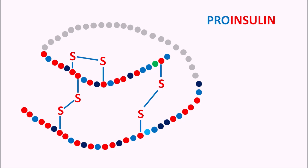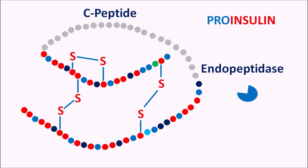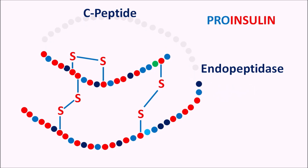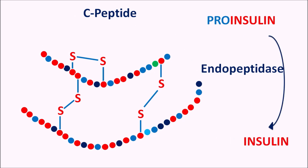The only remaining step to produce insulin is removal of the inactive C-peptide chain. Endopeptidases cleave on both terminals to release the C-peptide, converting pro-insulin into insulin. In summary, insulin is biosynthesized from pre-pro-insulin (110 amino acids), which is converted to pro-insulin (74 amino acids) by removal of the N-terminal, and then pro-insulin is converted to insulin (51 amino acids) by removal of the C-peptide.